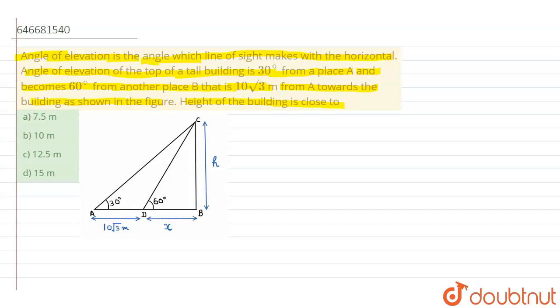At first it makes an angle of 30 degrees, then travels from A to B at 10 root 3 meters, then it makes an angle of 60 degrees. So let us suppose here that the value of DB is x.